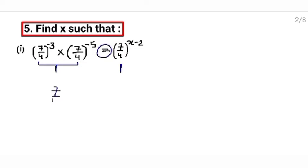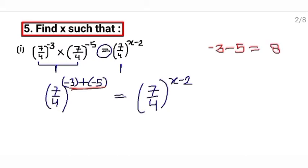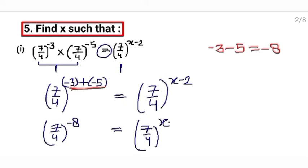The bases are same: 7 upon 4. We are multiplying them, so powers will be added. Minus 3 plus minus 5 equals — they have given 7 upon 4 raised to the power x minus 2. Now solve: minus 3 plus minus 5. Signs are same so values will be added — it will be 8 and the sign will be minus. So it becomes 7 upon 4 raised to the power minus 8, equals 7 upon 4 raised to the power x minus 2.